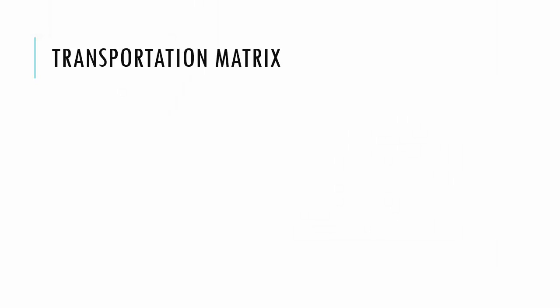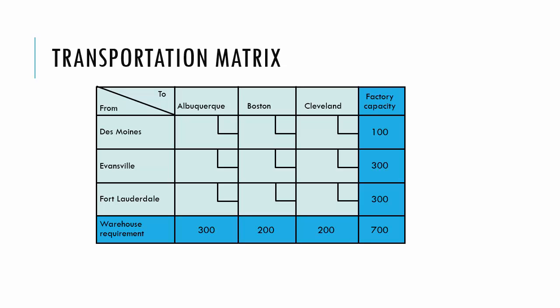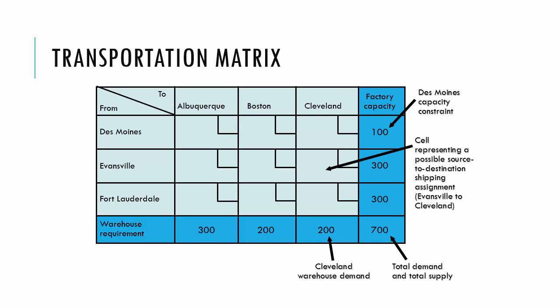What about the constraints? Let's look at what the book calls the transportation matrix to help us with the constraints. We have a similar setup to the cost table, with both demands — the warehouse requirements — and the factory capacities. The demands are at the bottom and capacity is on the right. We would like to give every warehouse the amount they want, but also make sure we do not ship more than we have from each factory. So we have two sets of constraints: first is demand, second is supply. Putting the data in this form helps us transfer it over to Excel to solve this type of problem.